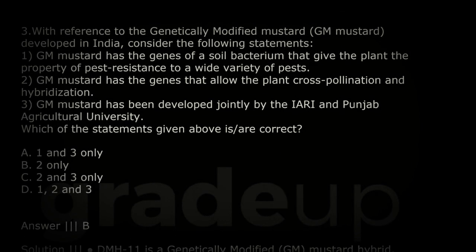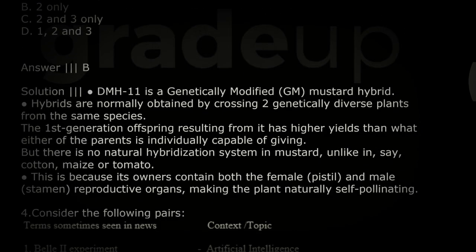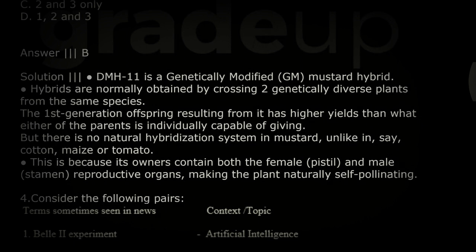Moving on: with reference to genetically modified mustard, GM mustard developed in India, consider the following statements. The correct option is B. GM mustard has genes that allow the plant cross-pollination and hybridization. DMH-11 is the scientific name — it is a genetically modified GM mustard hybrid. Hybrids are normally obtained by crossing two genetically diverse plants from the same species. The first generation resulting from it has higher yields than either of the parents is individually capable of giving.